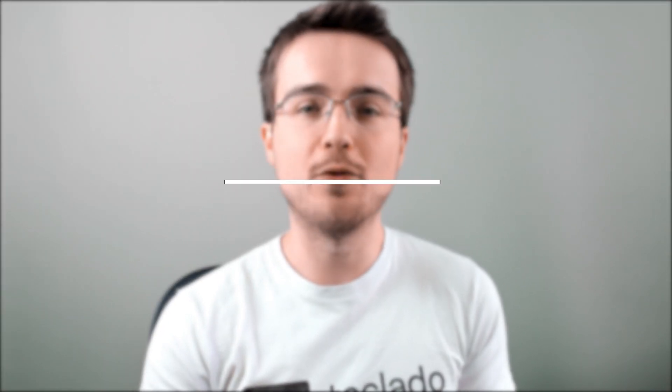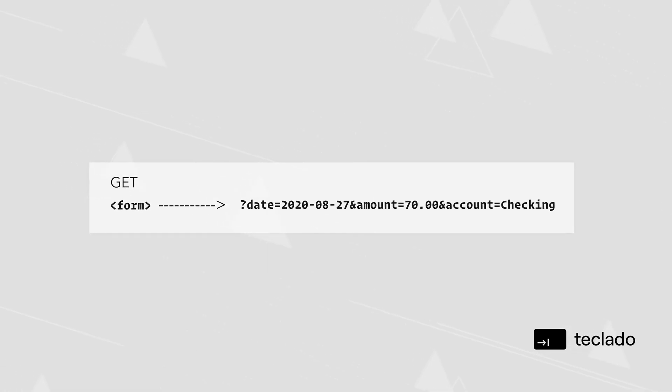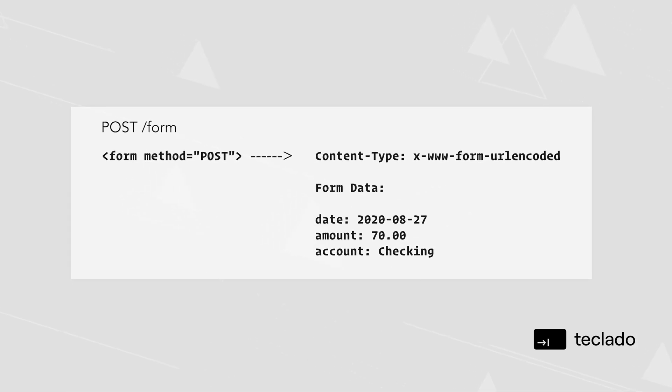We can tell our form to use different types of requests depending on how we want it to send data. If we tell our form to use GET, then it can't put the data in the payload — it puts it in the URL. And if we tell it to use POST, then it'll put the data in the payload.